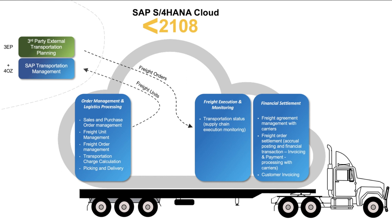And if you wanted to integrate to an on-premise SAP Transportation Management system, you also needed to look at scope item 4OZ, which is found in the best practices on the on-premise side of SAP S4HANA. In this scenario, your order-based transportation requirements would translate into freight units, which would be sent to those external systems where planning would happen, then come back into SAP S4HANA Cloud as freight orders that you could track execution on and perform financial settlement.